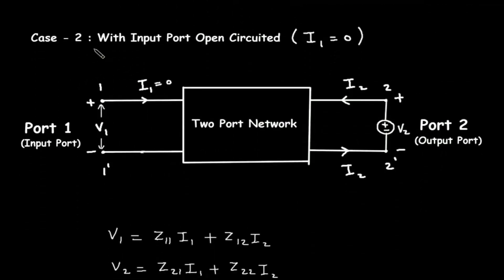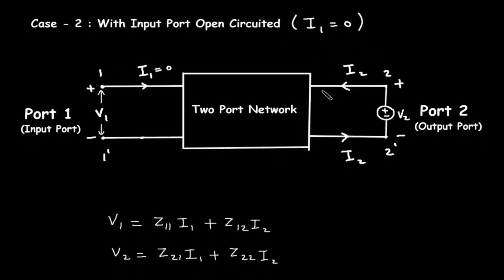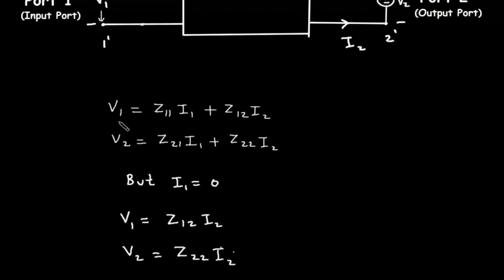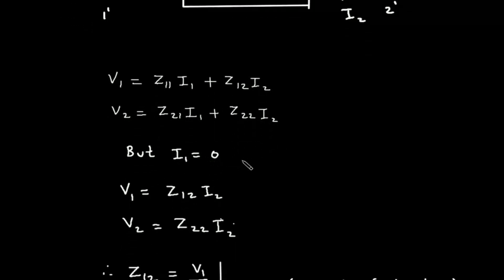Now, case 2. In case 2, we will consider port 1 as open circuited and port 2 as V2. When port 1 is open circuited, I1 is equal to 0. Again we will write the equation for Z parameter: V1 is equal to Z11 I1 plus Z12 I2, and V2 is equal to Z21 I1 plus Z22 I2. But I1 is equal to 0.